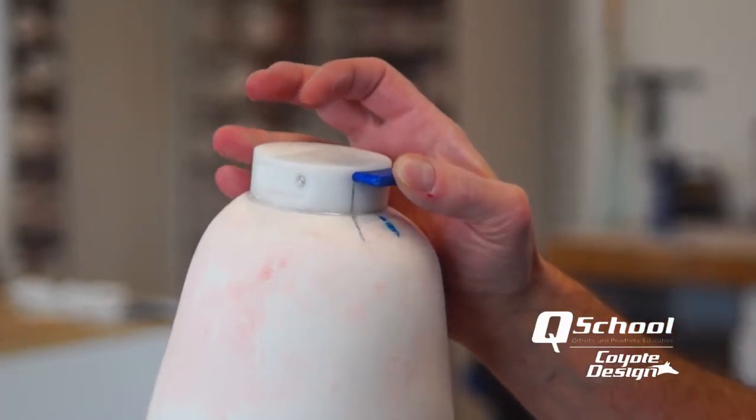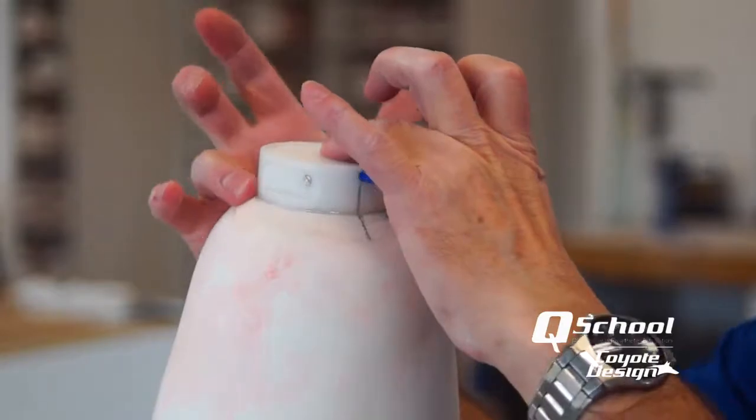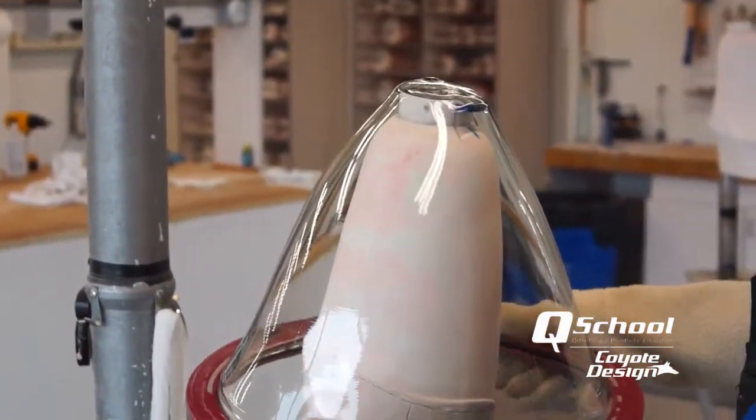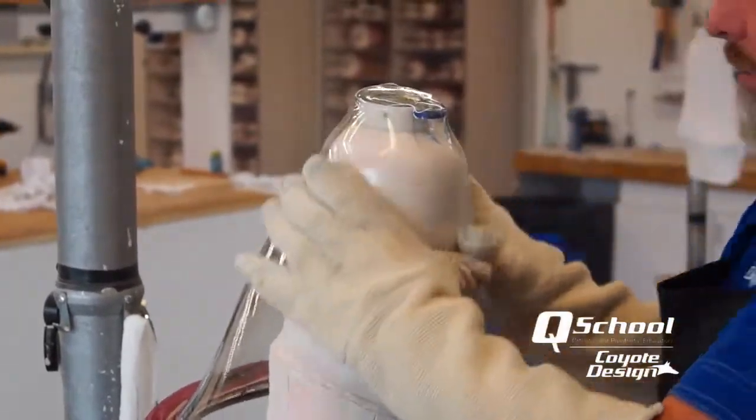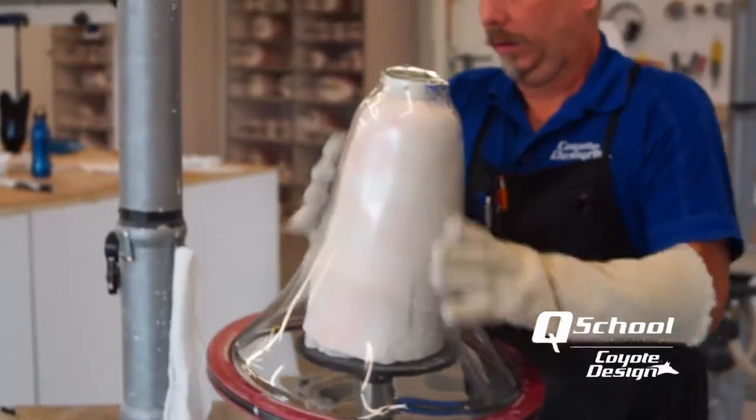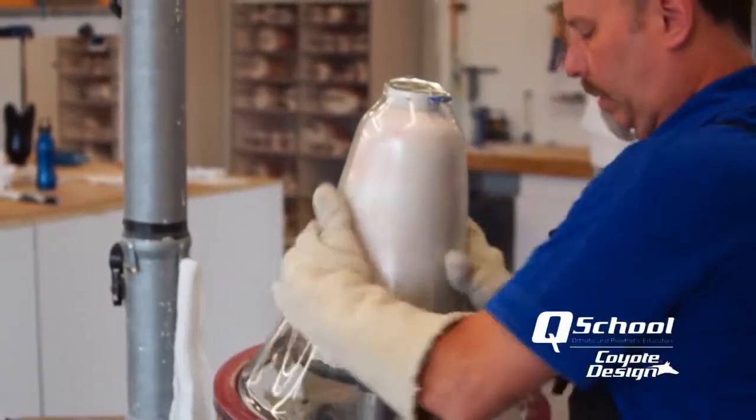We'll go ahead and cook our plastic and let this set up just for a minute. And now we're ready to pull. So the one thing we want to watch when we're pulling a plastic over the top of something in a blister form is make sure we get good draw around our distal end.